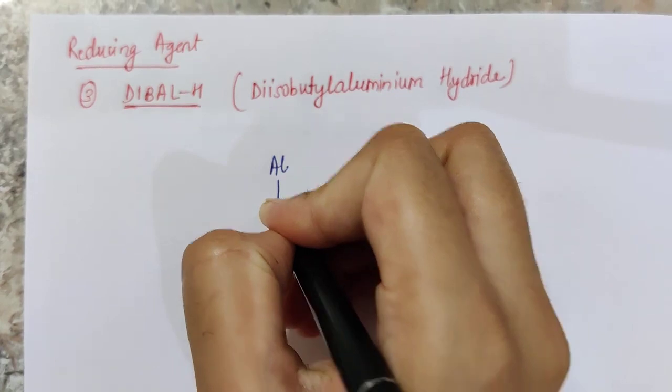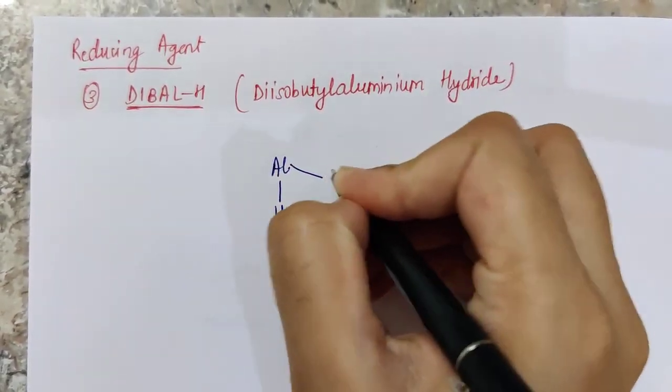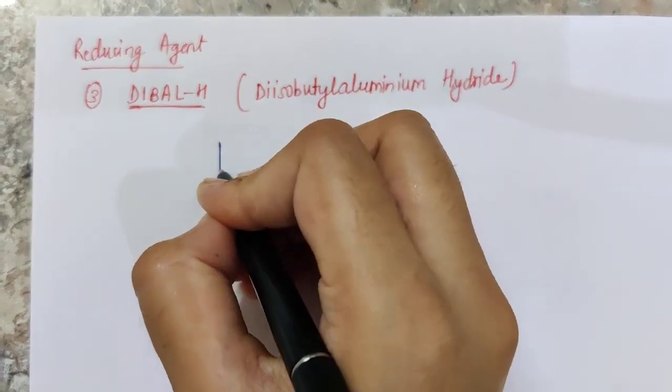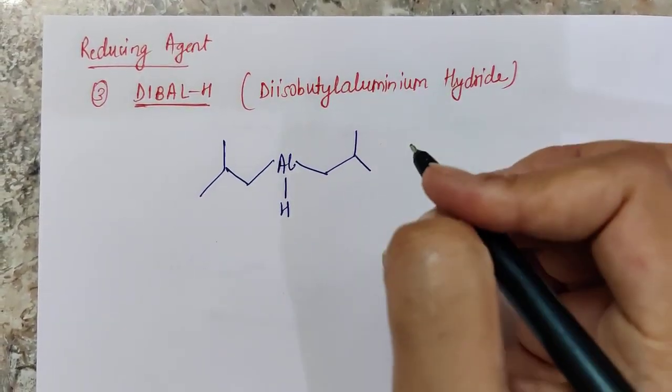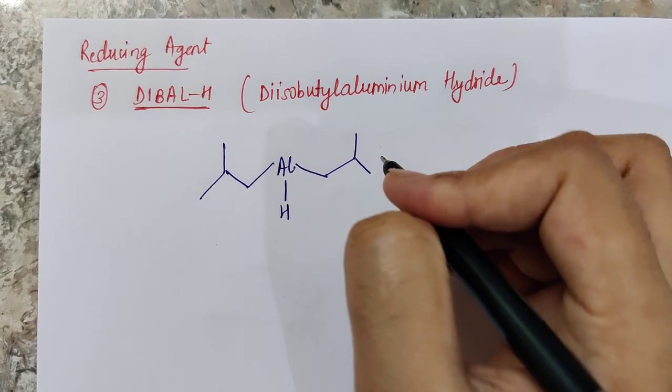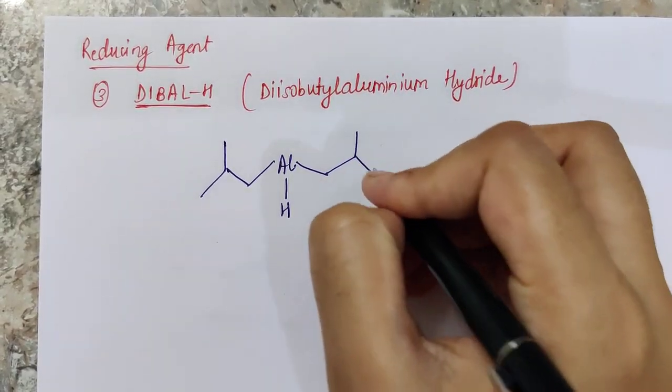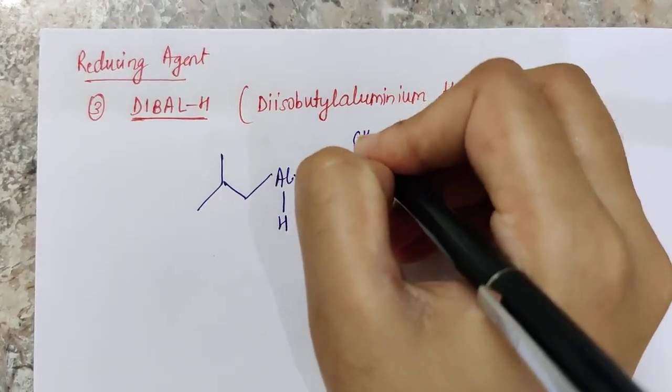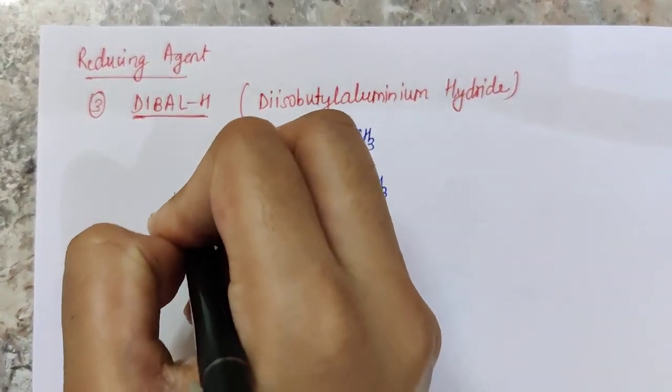aluminum have two similar substituents that is isobutyl. Two isobutyl groups are attached to aluminum along with one hydride.